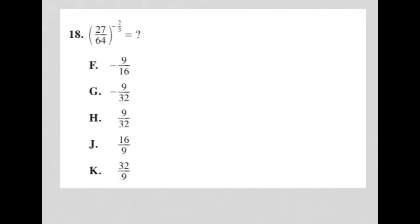This question says 27 over 64 to the negative two-thirds power. The best and fastest way to find this answer is to just throw it into your scientific calculator. We're going to throw it in as is, 27 over 64, then raise that up to the negative two-thirds power. What I get when I do that is that the answer is 16 over 9, and therefore answer choice J.